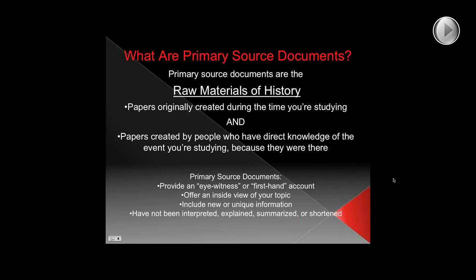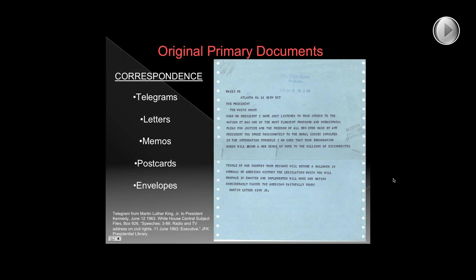First, correspondence. When people think about primary sources, correspondence is one of the first things that come to mind. Correspondence is really just writing from one person directly to another. This includes personal letters, official letters usually called memos that go from one office to another, and telegrams — which used to be a message to somebody, sort of like a stellar version of a text message. There's one up here on the screen. This is a telegram from Martin Luther King Jr. to JFK about JFK's famous civil rights speech in 1963. If a researcher came to me looking for primary sources to understand what civil rights leaders thought about this speech, this would be a really great resource to study.